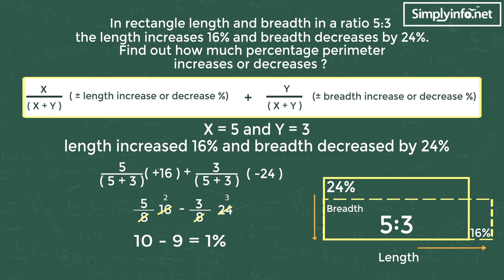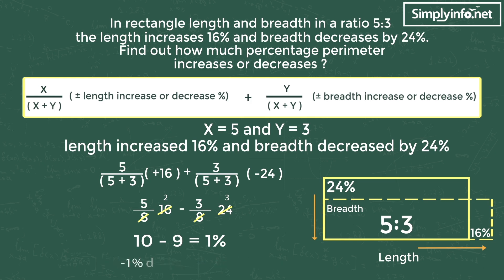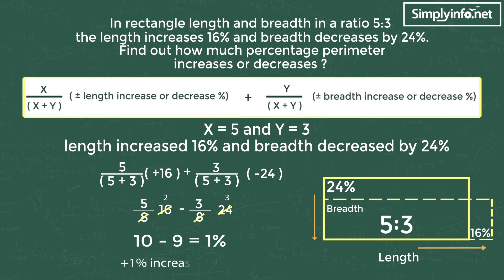We need to know whether the perimeter increased or decreased. Whenever you get a positive value in the answer, the perimeter has increased. Whenever you get a negative value, the perimeter has decreased. As we got a positive value of 1%, the perimeter increased. So the answer is 1% increase in the perimeter.